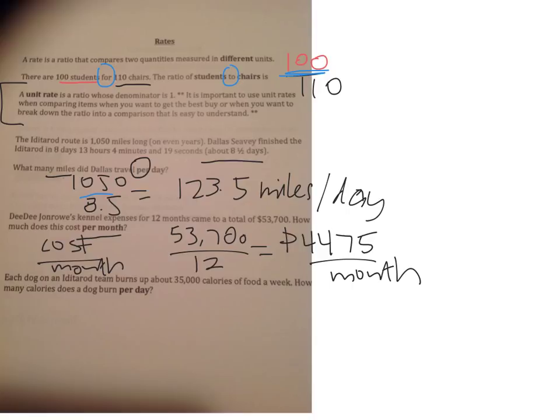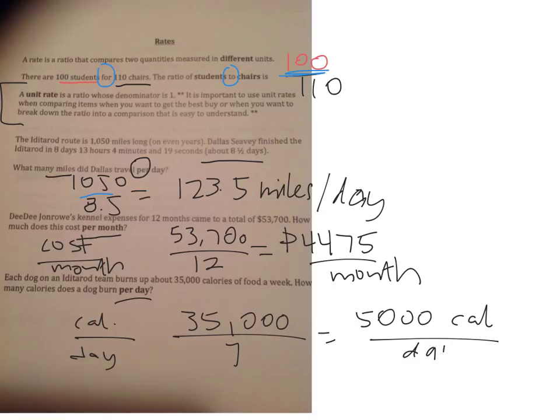Last question. Each dog on an Iditarod team burns up to about 35,000 calories of food a week. How many calories does a dog burn per day? So it's going to be calories per day. 35,000 divided by how many days in a week? Seven, which is going to give you 5,000 calories per day.